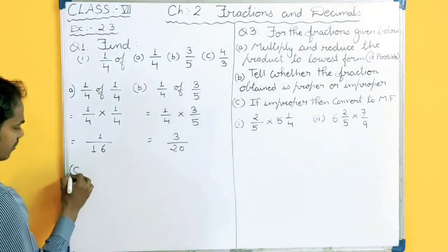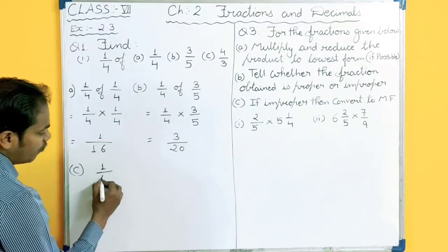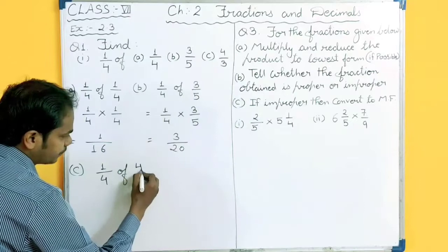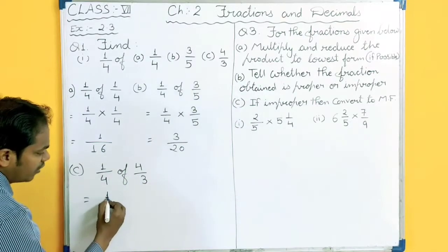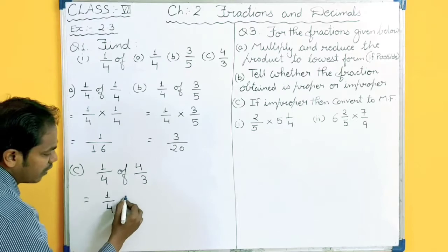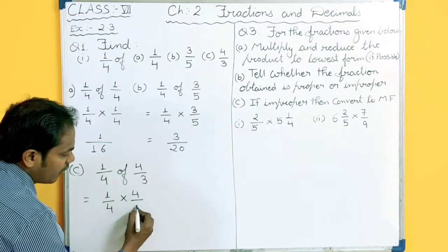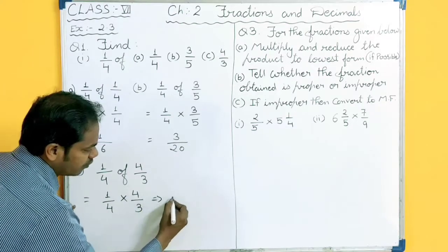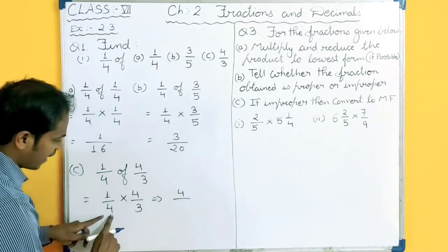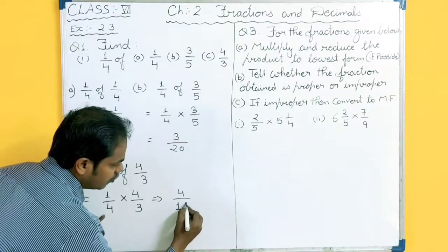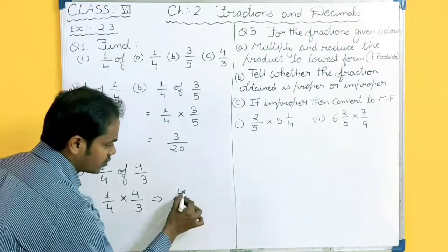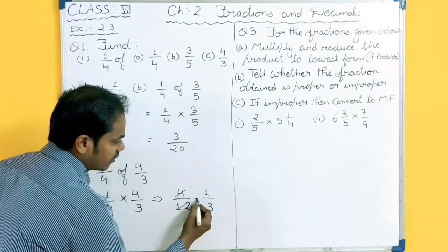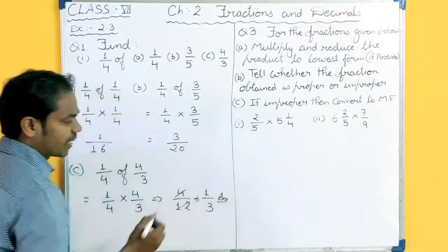Same way you can solve part c as well. One fourth of four upon three. So one upon four multiplied by four upon three. One fours are four and four threes are twelve.